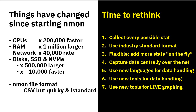First, I'd like to collect every possible stat. We don't know what we'll want in the future, so let's grab everything now so that if we decide to look at a new stat, we can see its history. Next, we'd use an industry-standard format for our data so we can share it with other applications and tools — a format flexible enough to add new stats without upsetting those tools, unlike the nmon format. We'd also want to capture all the data across the network, removing the problem of getting nmon files from various servers to some central place for graphing. There are also excellent new languages for data handling that we should make use of.